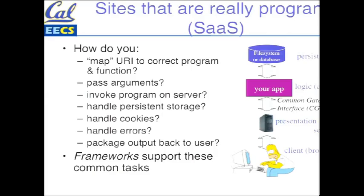They've come to be called the three tiers of the three-tier architecture. The presentation tier is the thing that actually interacts most closely with the user — it presents content back to the user. That's gonna be a web server like Apache. The logic or application tier is where your app actually runs; that's where the interesting stuff happens — what makes one site different from another. And the persistence tier, handled by a file system or a database, is information that's got to survive over the long term or across requests.